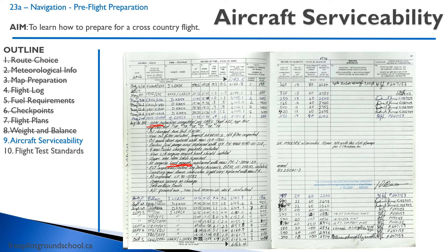This is what the maintenance log is going to look like. You can tell here when this 100-hour inspection was done and the tach time it was completed. So you couldn't fly this airplane beyond, let's say, 6,247.5 hours — something you would check. And at least on this page, there are no defects that are unrecorded or unrectified.